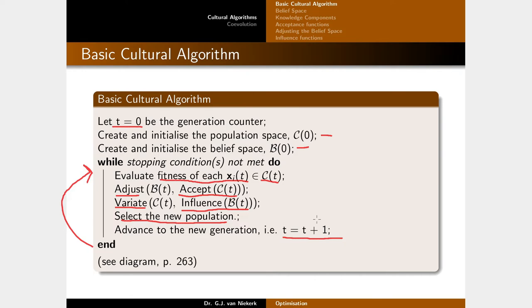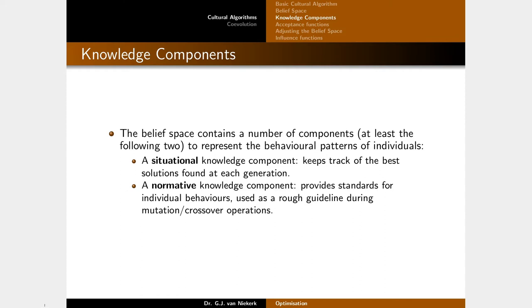The belief space contains at least two components to represent the behavioral patterns of individuals. The first is the situational knowledge component, which keeps track of the best solutions found at each generation. The second is the normative knowledge component, which provides standards for individual behaviors and serves as a rough guide in mutation and crossover to steer toward promising areas per dimension and away from less desirable areas.